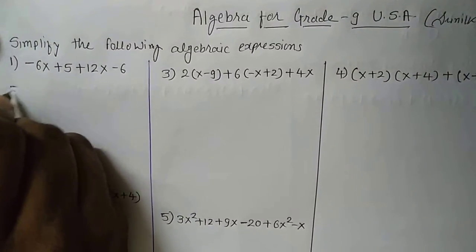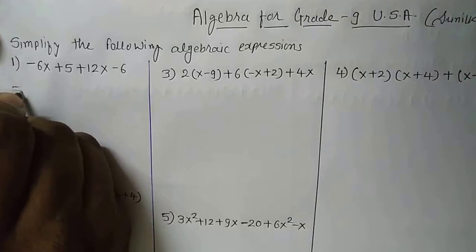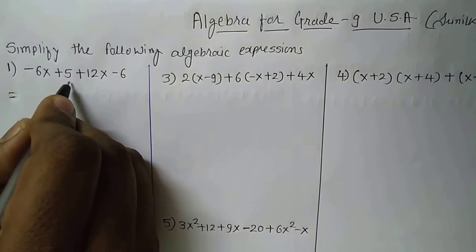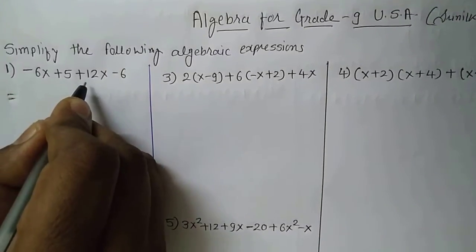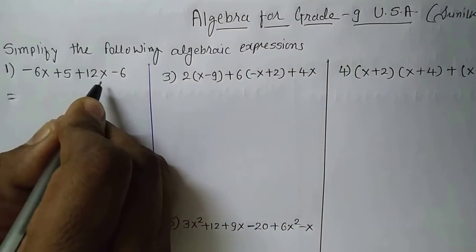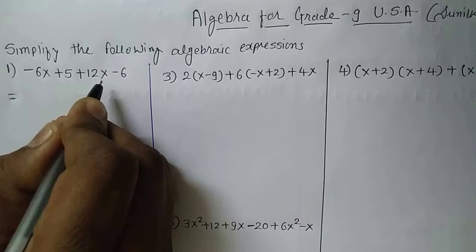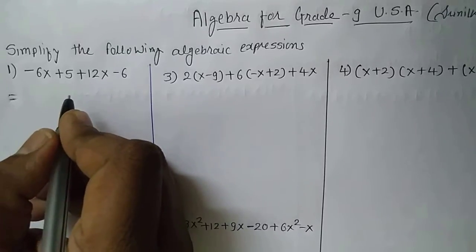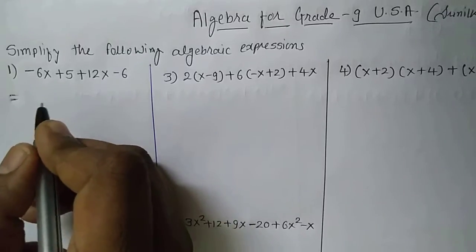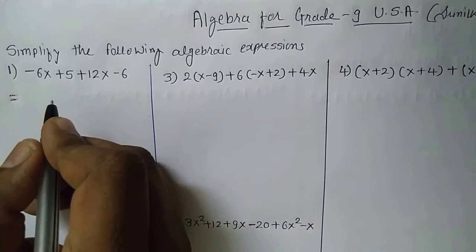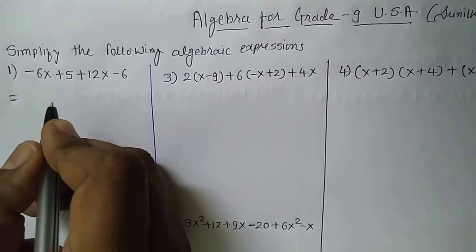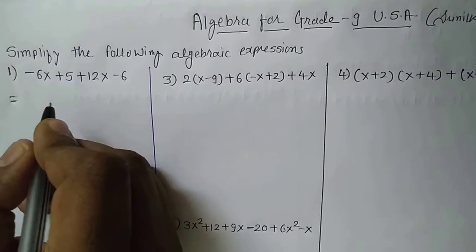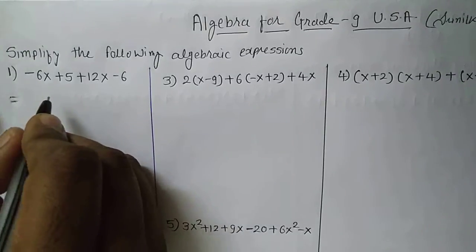You can see the question is: minus 6x plus 5 plus 12x minus 6. To solve this algebraic expression, first of all we have to gather the like terms — meaning we have to group the like terms first.